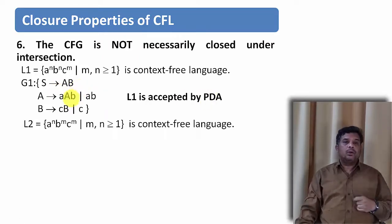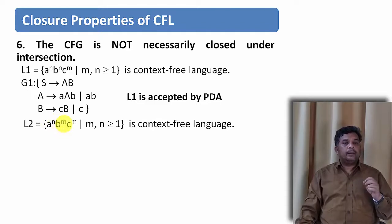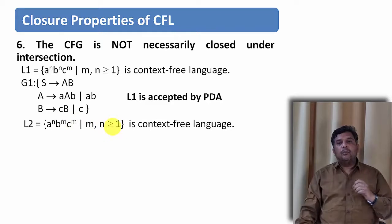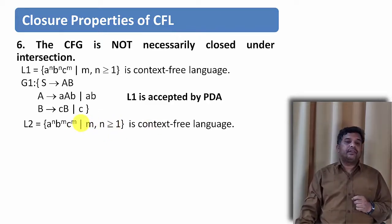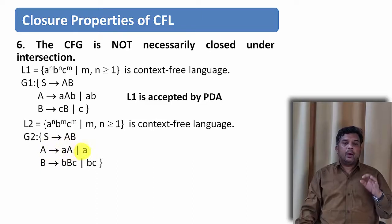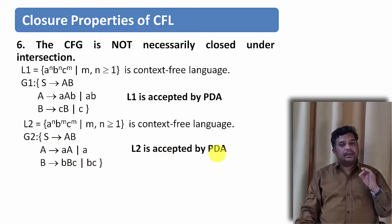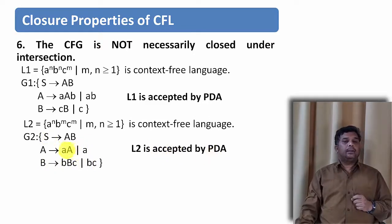Let us take one more context-free language. This language will generate strings of the form a to the power n, b to the power m, and c to the power m, where m and n are both greater than or equal to 1. This is also a context-free grammar, and for this we will have a grammar where S derives ab, A derives aa or a, and B derives bbc or bc. This grammar is also accepted by a pushdown automata.